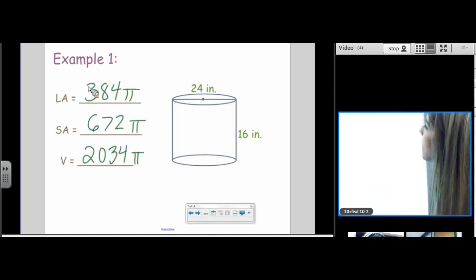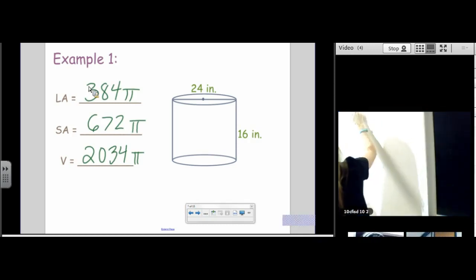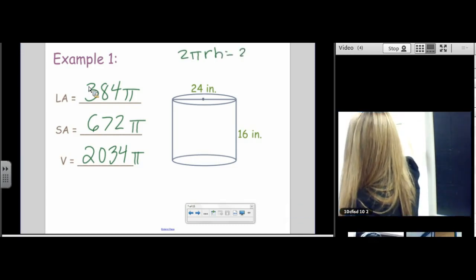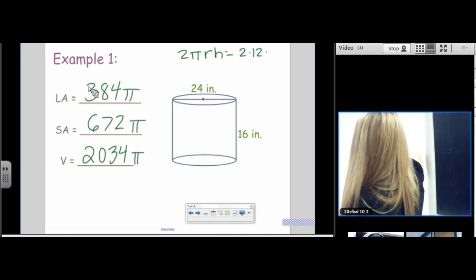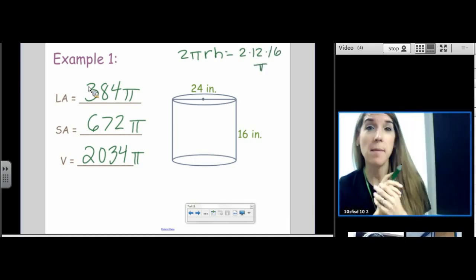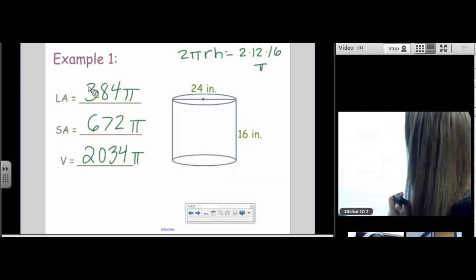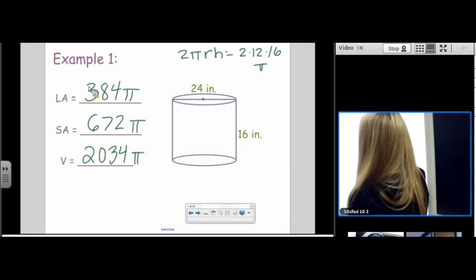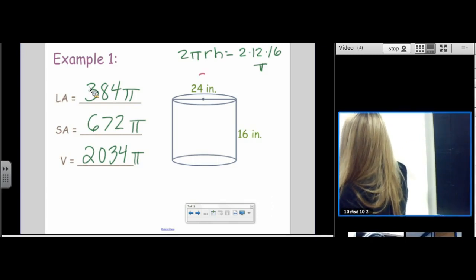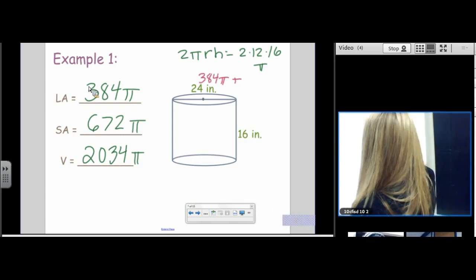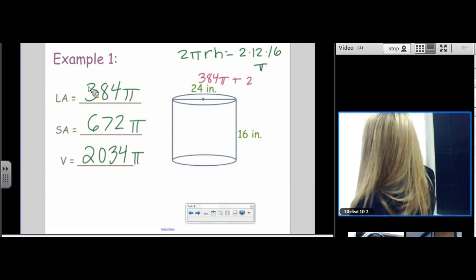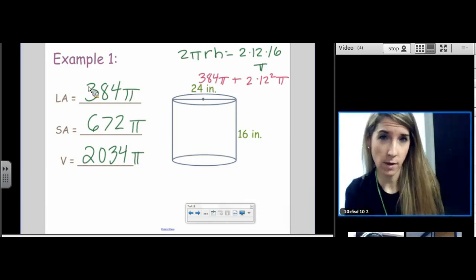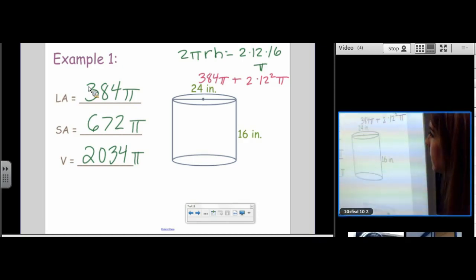Let's go over these really quick. So the lateral surface area is 2πrh. So we are literally multiplying 2 times 12 times 16. And then we don't want to forget to tack the π back on, to multiply by π in the end, but not in the calculator. So 2 times 12 times 16 is 384. Then to find the surface area, we take what we already found. We take 384π, and then we add 2 times r². We don't want to forget about that π there, too. So 2 times 12², 144 times 2, plus 384, gets us our 672.